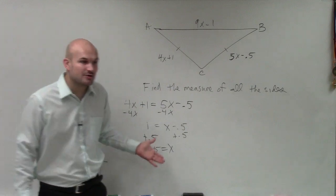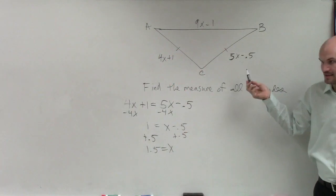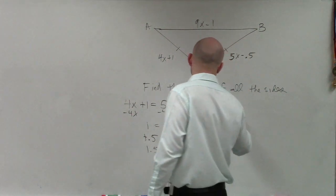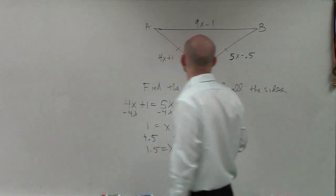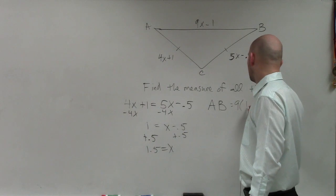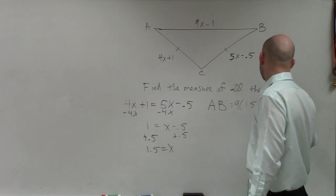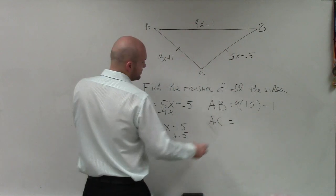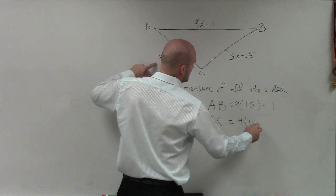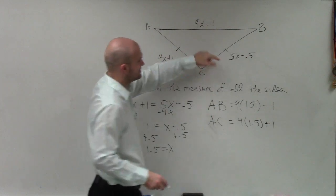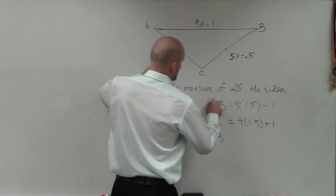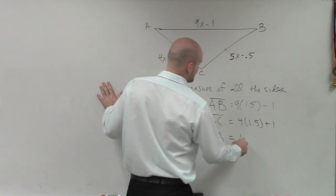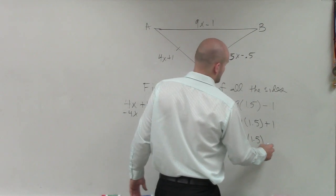So now that I know the value of x, can I plug in the value of x for each one of these equations to find the length of each one? Yes, I can. So therefore, I can say the measurement of side AB is going to be 9 times 1.5 minus 1. Side length AC is going to be 4 times 1.5 plus 1. And side CB, these are all line segments, right? They're all sides. Line CB is equal to 5 times 1.5 minus 0.5.